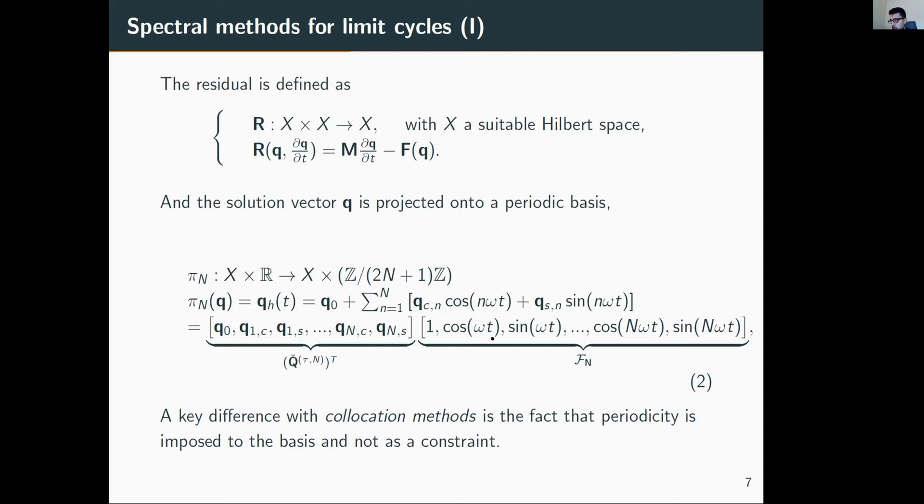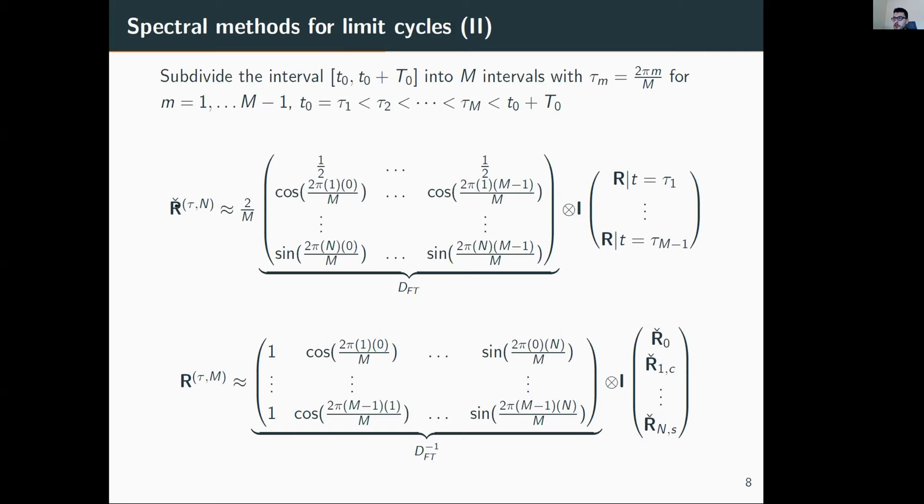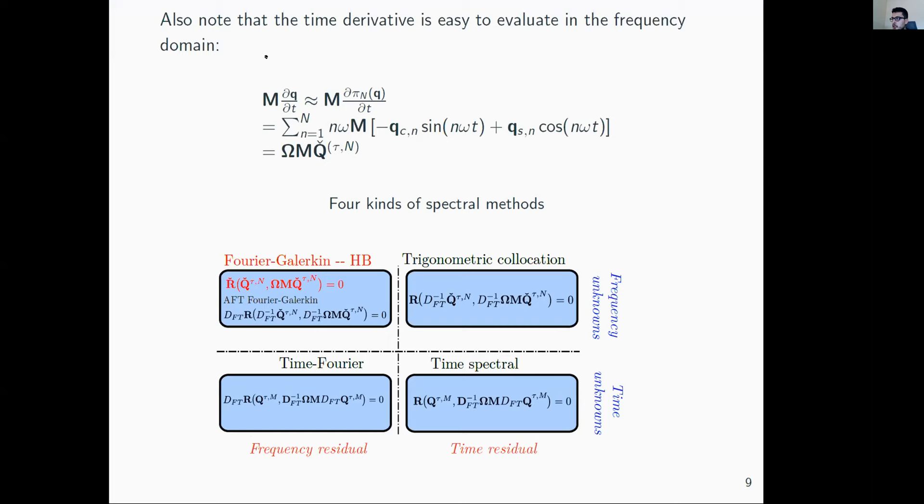In this method, periodicity is imposed not as a constraint but in the basis itself—this is the difference with collocation methods. This method uses discrete Fourier transforms, direct and inverse. As I said, in frequency domain the time derivative is easy to evaluate—it's simply multiplication by the frequency times the harmonic order.